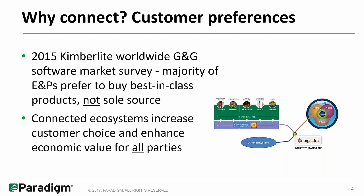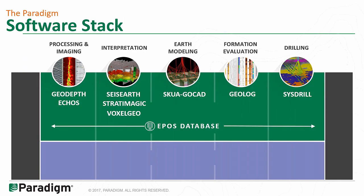We recognize that, and we feel there's value to connect all these ecosystems together. The square is our Paradigm software, and here's the symbol for the ocean, the Schlumberger ecosystem, and we want to connect them with an open standard. When you connect things together like that, it creates customer choice and actually creates more value for everyone. Paradigm has a full line of solutions: Processing and Imaging with Geodepth and Echos, Interpretation with Sizer, Stratomagic, and VoxelGeo, GoCAD for Earth Modeling, Geolog for Formation Evaluation, and Sysdrill for Well Planning — all sitting on top of the EPOS database.